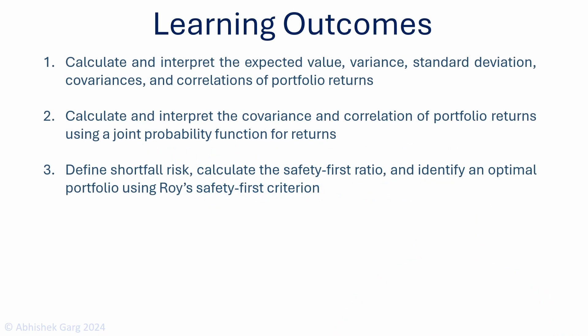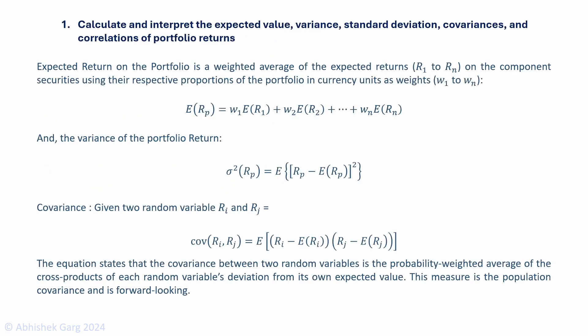There are three learning outcome statements in this module. We will cover them one by one. The first is: calculate and interpret the expected value, variance, standard deviation, covariances and correlations of portfolio returns.